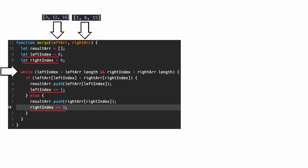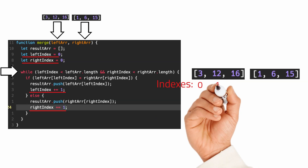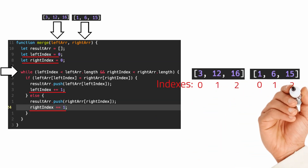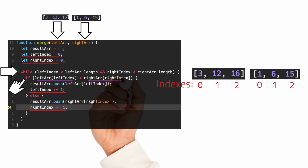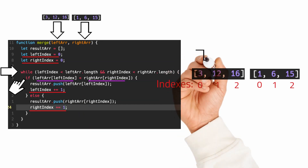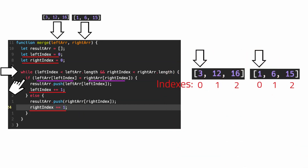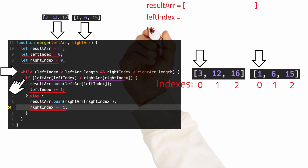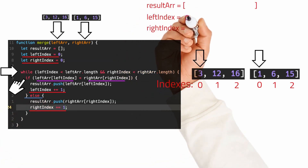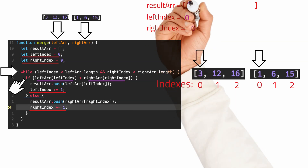If we draw this out, here are the two arrays and their indexes. We check to see if the element at the left array index — currently zero — is less than the element at the right array index — also zero. Is three less than one? No. So we do what's in our else condition: push the right array element at its current index to the result array and increment the right array index. Now our right array index is one.